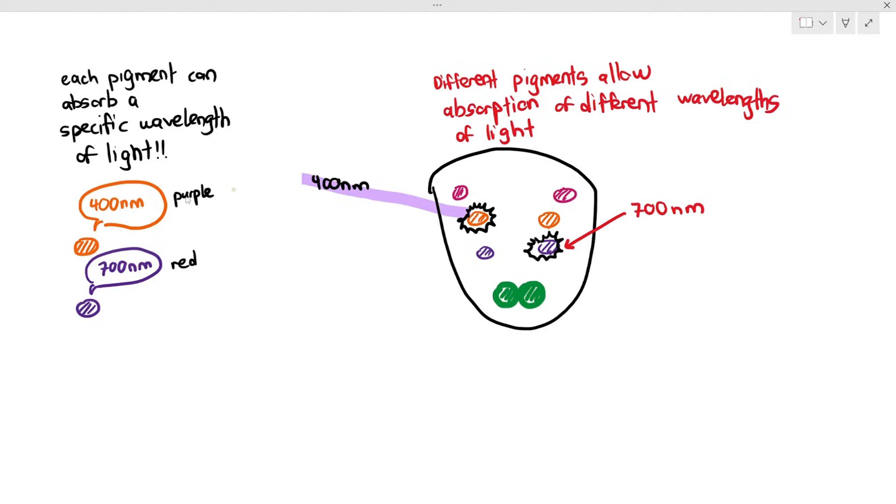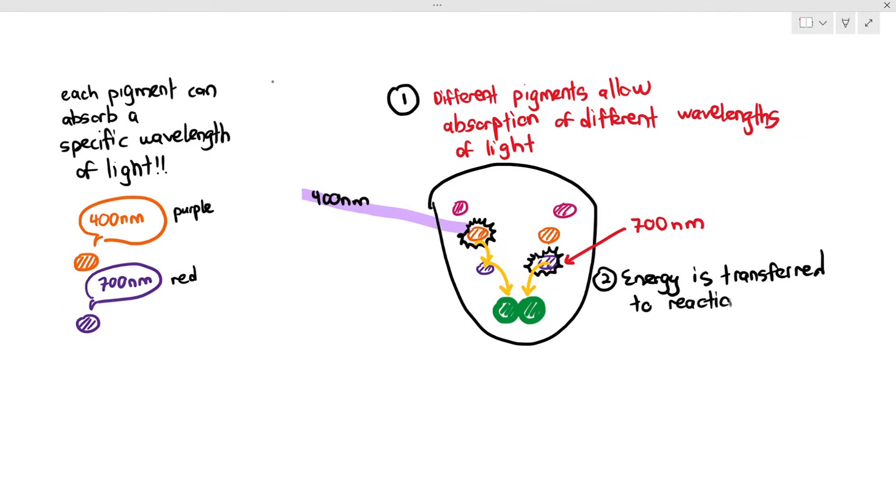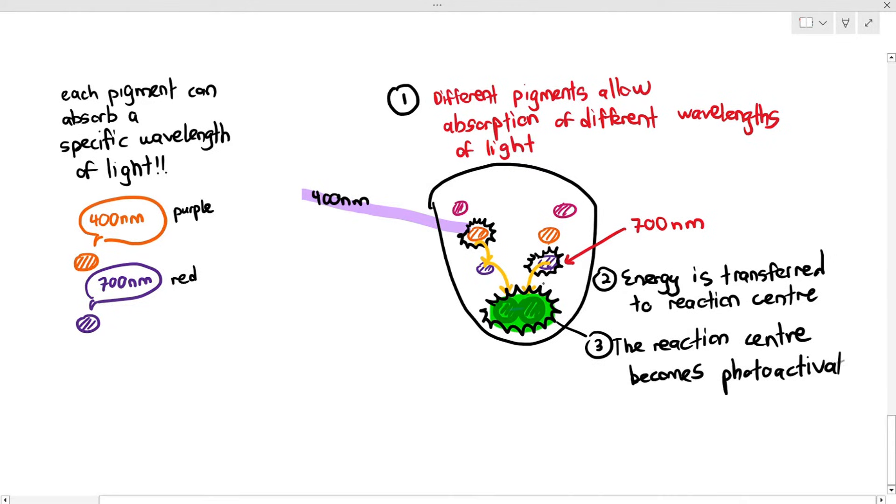Once they absorb the light, what do they do to the energy that they have absorbed? The energy is then transferred to the reaction center, which is made up of two chlorophyll A molecules. When the reaction center receives enough energy, we will say that the reaction center becomes photo activated, which means the reaction center has been activated due to the presence of light. When there's enough energy in the reaction center, they will release out a high energy electron.